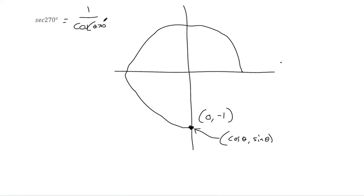So this is the same problem. Secant of 270 is equal to 1 over cosine of 270 because they're reciprocals. And so since cosine is 0 here, this one we should be saying undefined because you can't do 1 divided by 0.